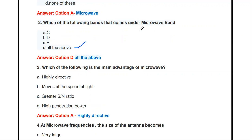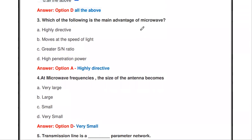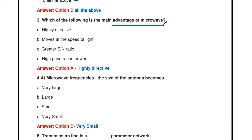The next question: which of the following is the main advantage of microwave? Options are: highly directive, moves at the speed of light, greater signal-to-noise ratio, or high penetration power. The answer is highly directive.